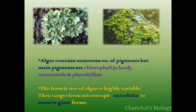Algae contain numerous pigments, but the main pigments are chlorophyll A, B, C, D, and carotenoids and phycobilins.